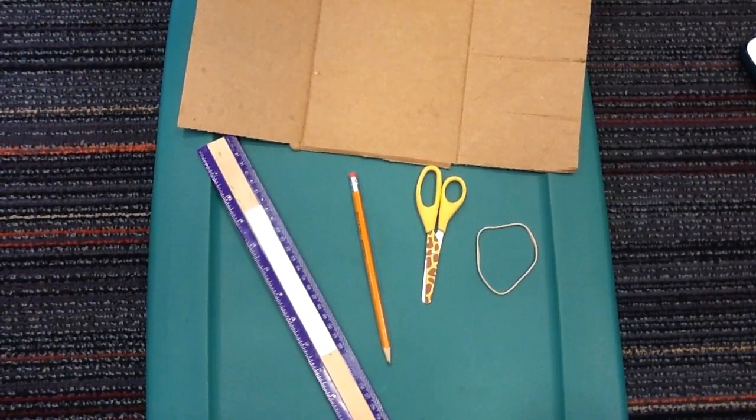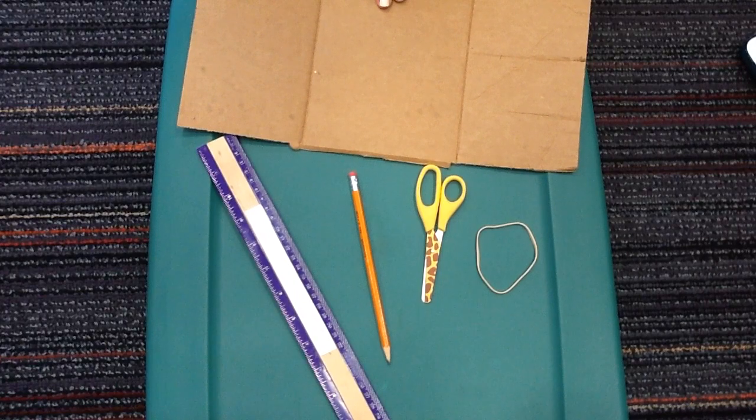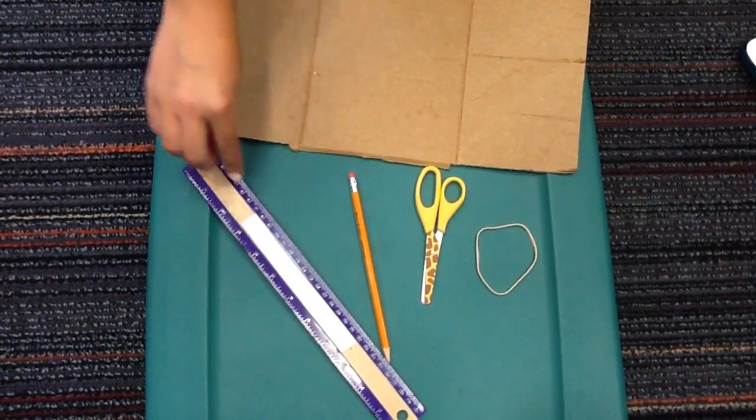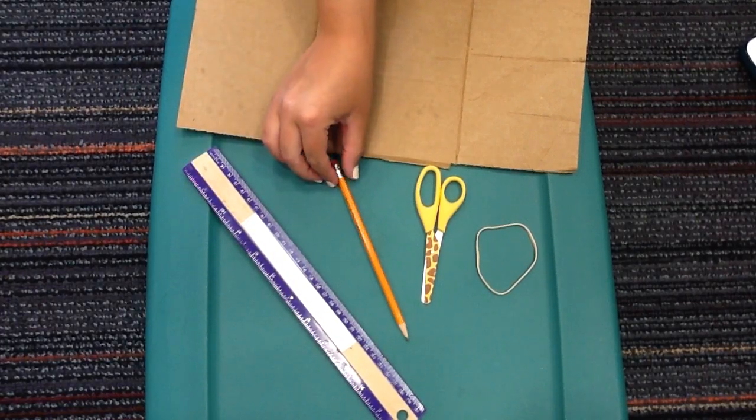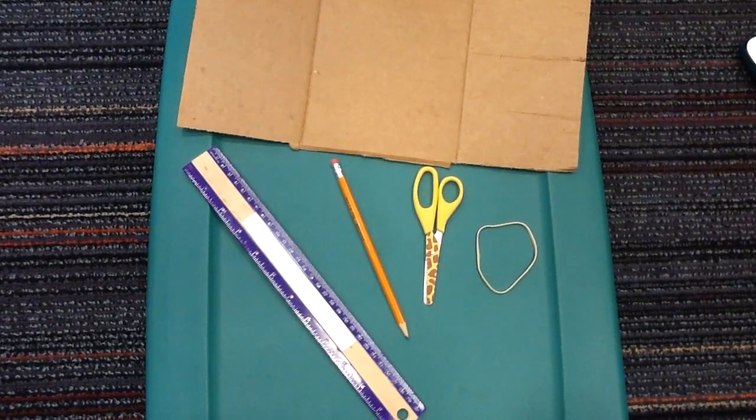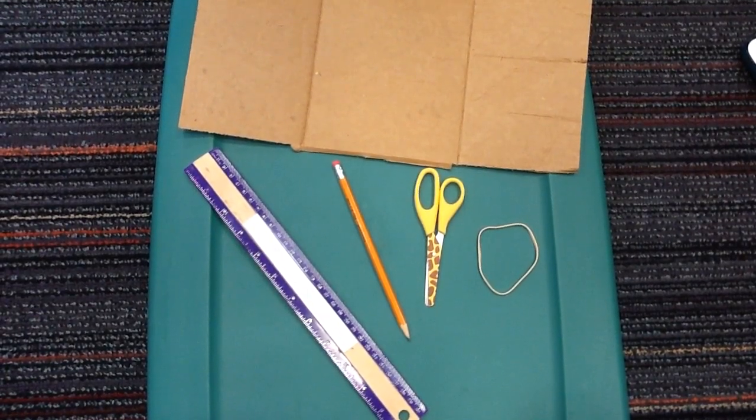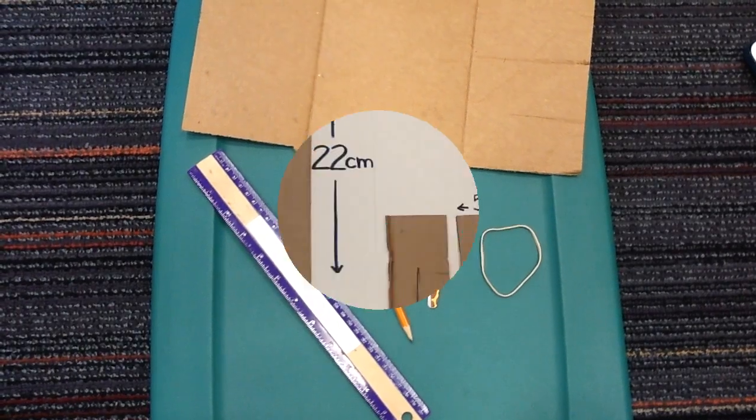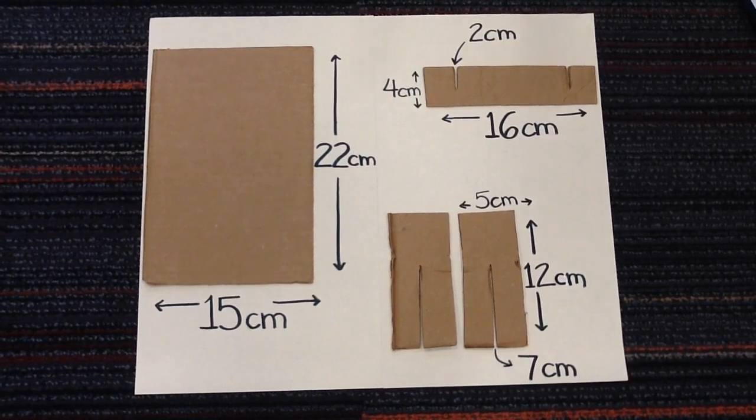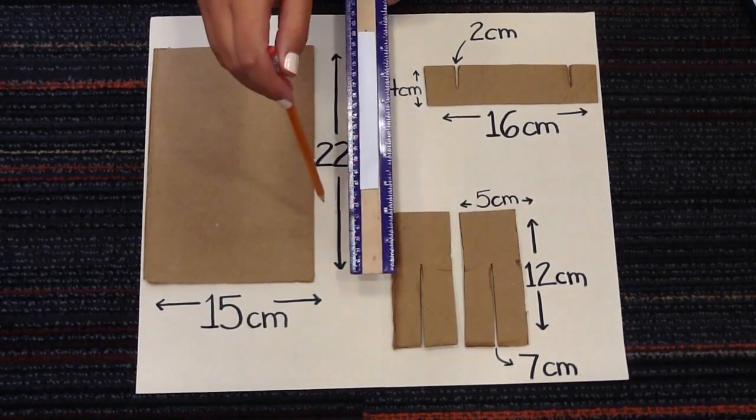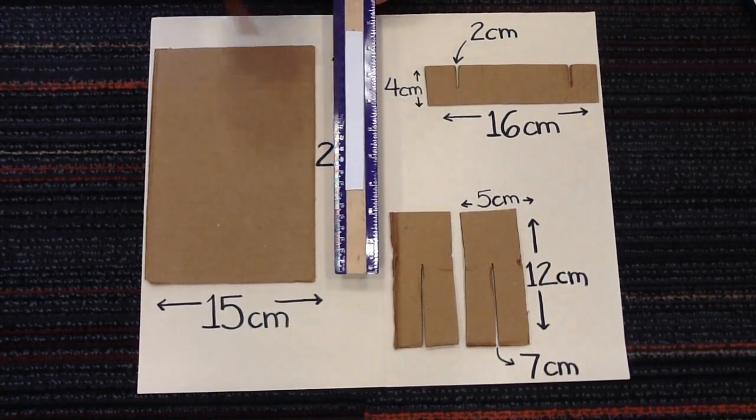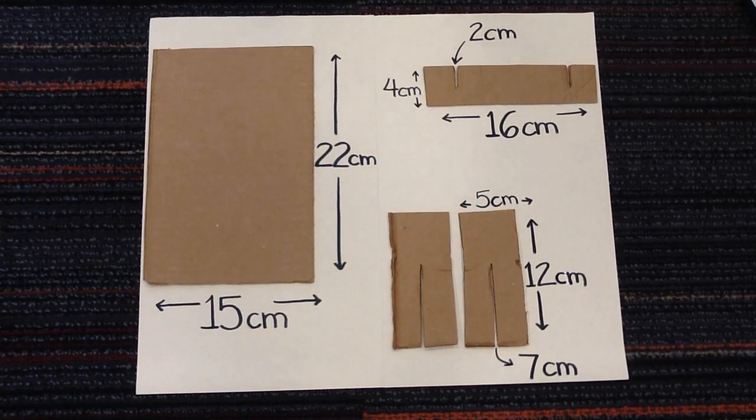You will need a piece of cardboard, a ruler, we will be using the centimeter side, a pencil, scissors, and a rubber band. When using scissors, safety first and have an adult caregiver supervise or help you. We will be cutting out four pieces for our launcher. Taking your ruler and using the centimeter side, take your pencil and measure out each piece. The measurements for each piece are shown here.